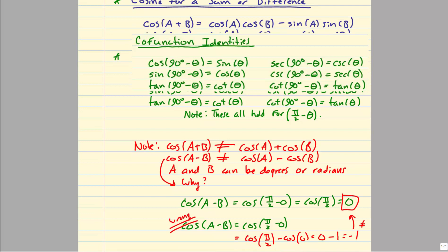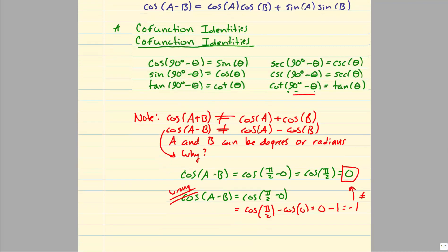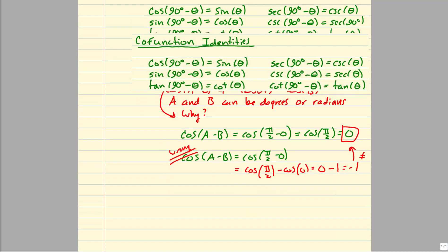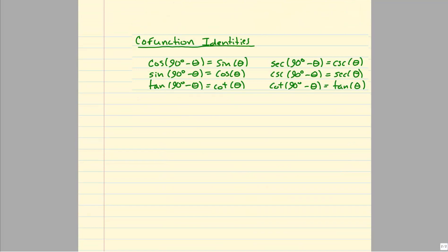With the cofunction identities, please be aware that even though we have 90 degrees minus theta equals sine theta, this holds true for π/2 minus theta as well, meaning you could be working in degrees or radians. Let's go ahead and look at some examples, and I'll pull most of these from MyMathLab so they'll be familiar when you start working on your homework.